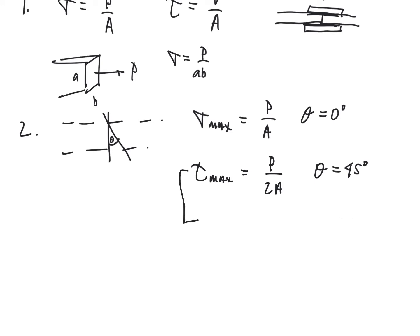So I do expect you to have that committed to memory. And on this plane, where we have a tau max, sigma is equal to P over 2A. Let's call that sigma at 45 degrees, just as an ad hoc designation.